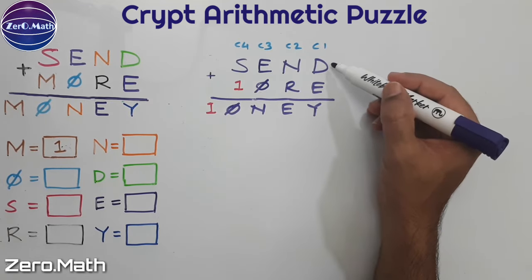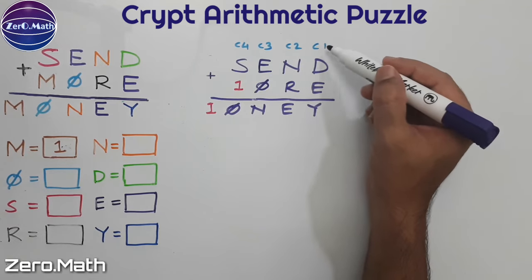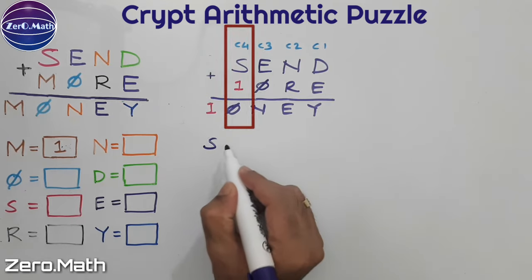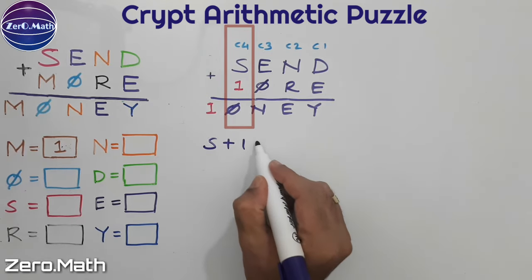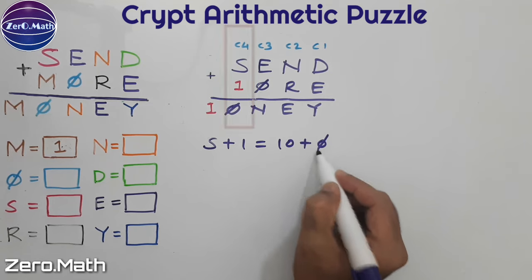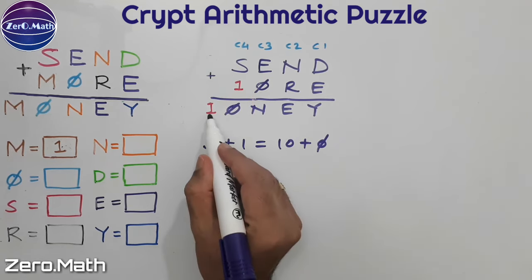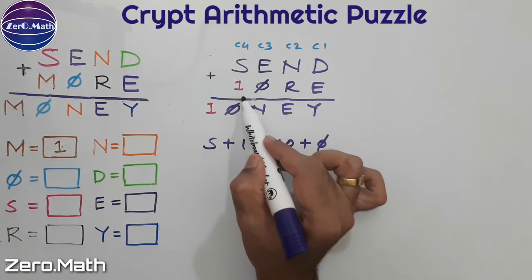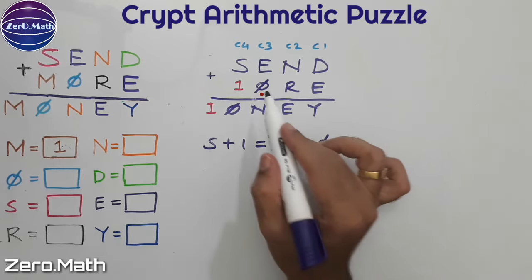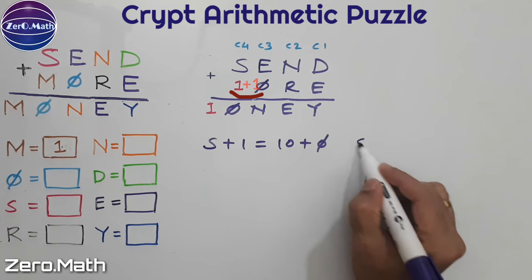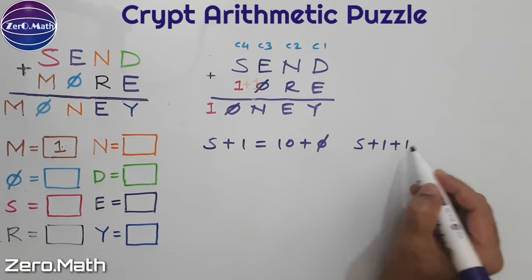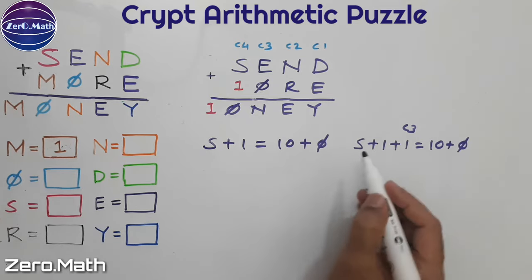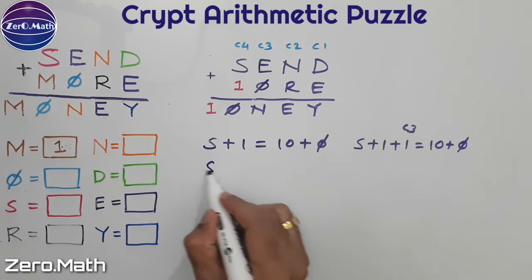Let's replace the value of M into the equation. For clarity, I've labeled each column C1, C2, C3, and C4. Looking at column C4, we can write: S plus 1 equals 10 plus O, where 10 represents the place value of the carried 1. There's another possibility that column C3 produces a carry — it may or may not. Let's assume it does produce a carry, giving us: S plus 1 plus 1 (carry from C3) equals 10 plus O.